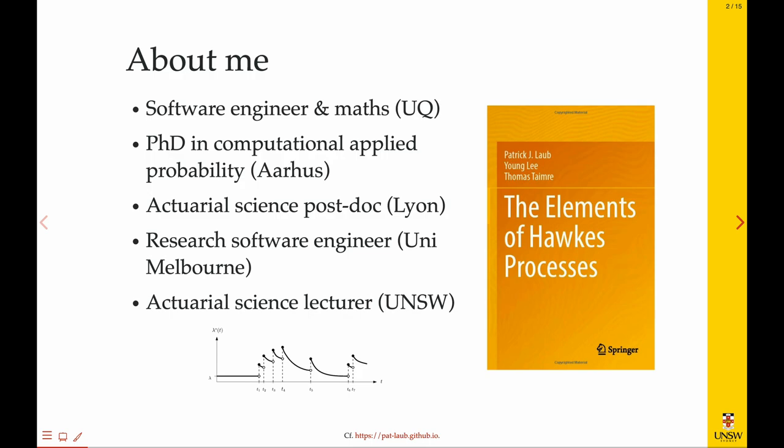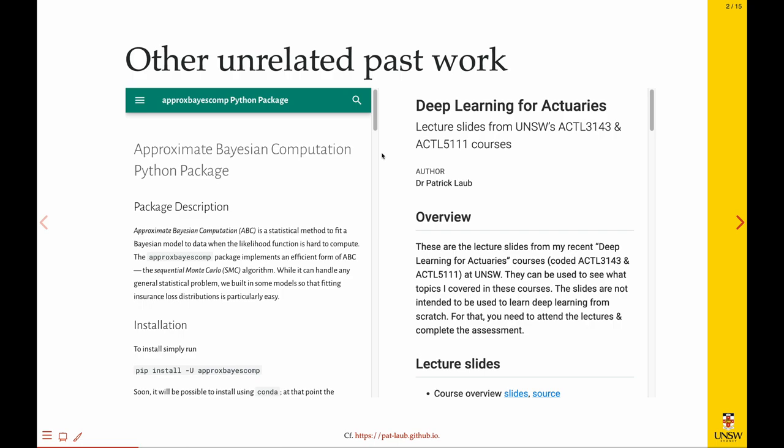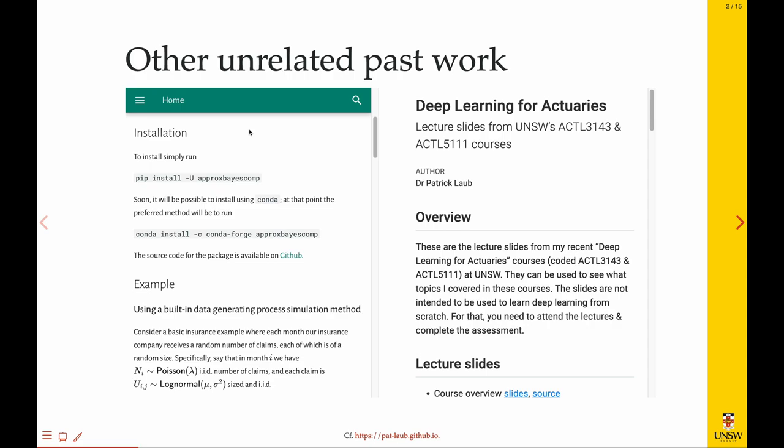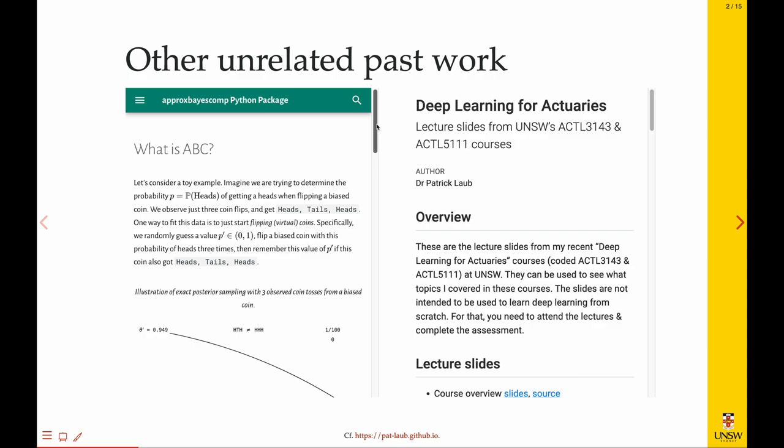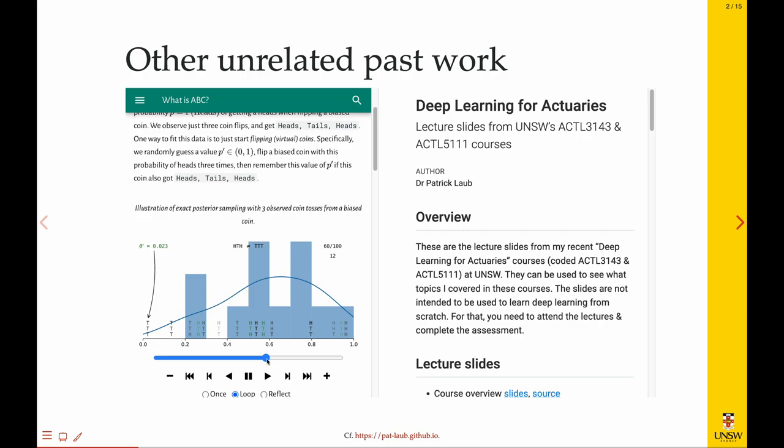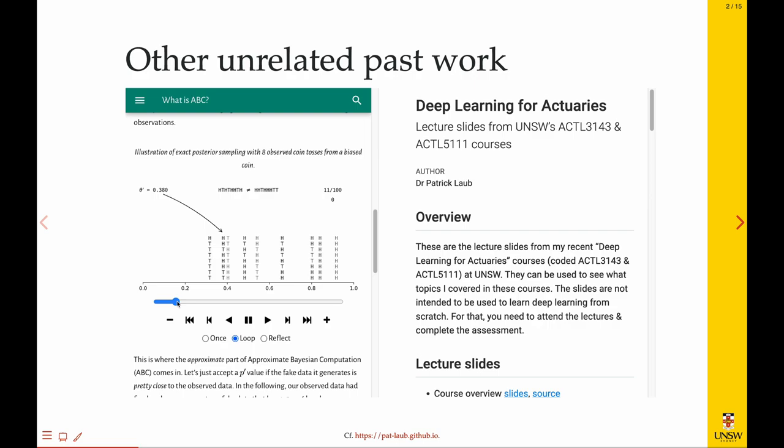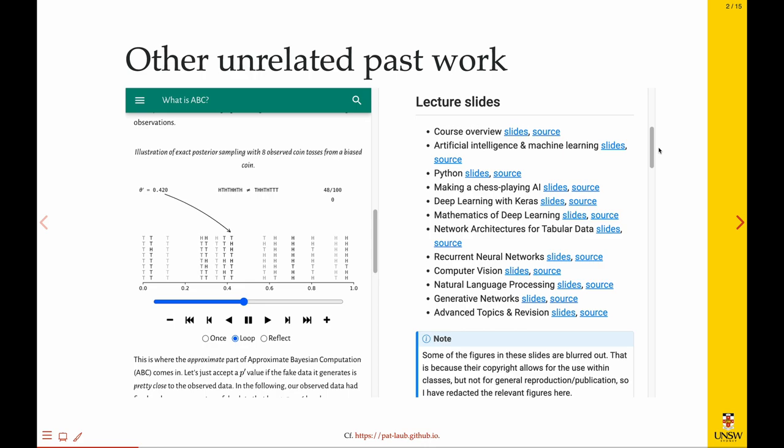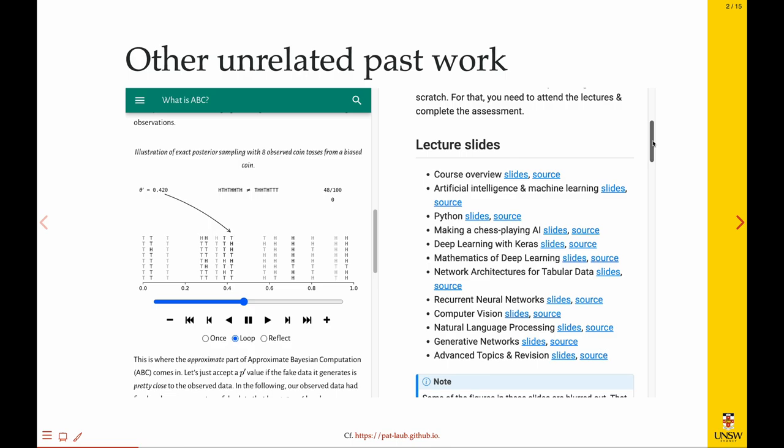Along the way I wrote this short book with two co-authors on Hawkes processes. If you see a little graph on the left which popped up in yesterday's talk, that's where it came from. Other unrelated things that might be of interest: I have a Python package for approximate Bayesian computation. I'm very proud of all these animations I made to explain what is ABC using just a coin flip example on that website. And more recently this year I developed a whole new course, Deep Learning for Actuaries, open source and online.